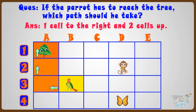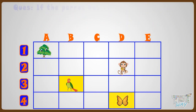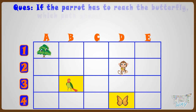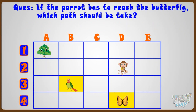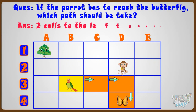Now let's find the path if the parrot has to reach the butterfly. Which path should he take? He should move 2 cells to the left and then 1 cell down. So his path should be 2 cells to the left and 1 cell down.